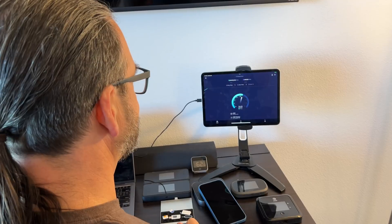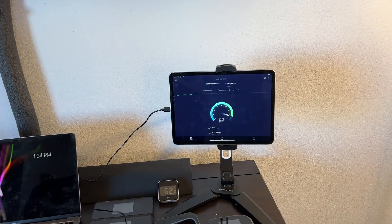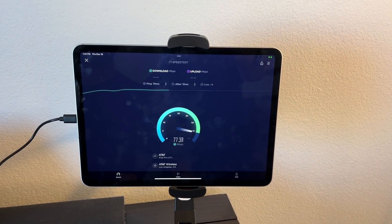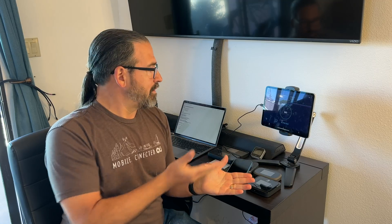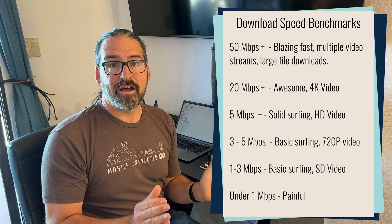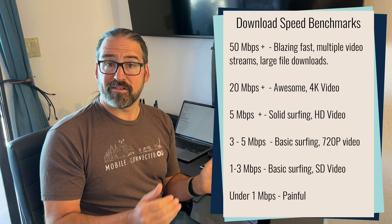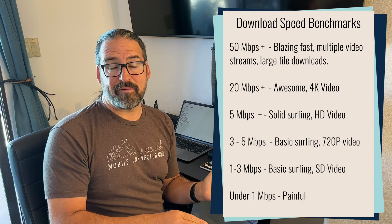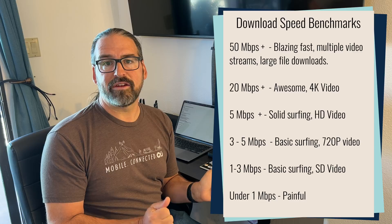Taking a look at the speed test app by Ookla, the primary thing it gives you is your download speed in megabits per second. That's one of the most important things to understand about your internet connection — how fast is data coming to you, how fast is your webpage loading, how fast do video files stop buffering. Right here I just got 87 megabits per second on AT&T — that is an exceptionally good speed. Even down at 20 megabits per second still feels pretty good. All the way down to 5 megabits per second, as long as we're not trying to do 4K video streaming, is still pretty darn usable.